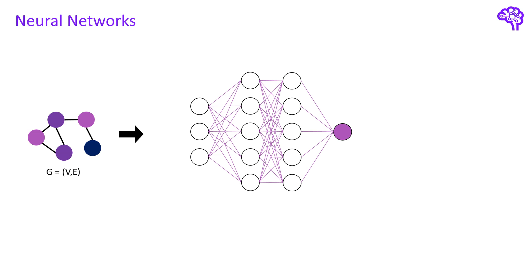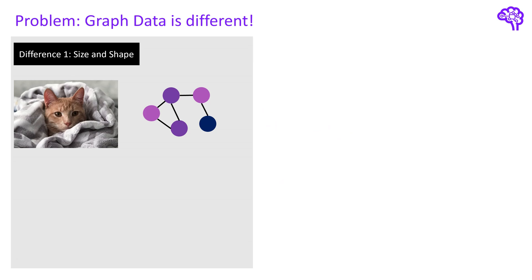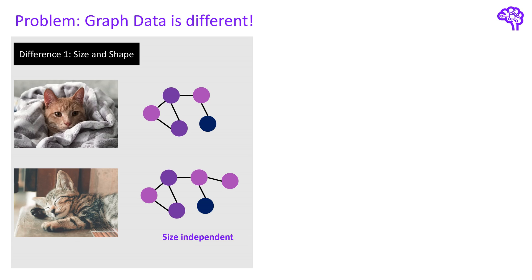As you might know, neural networks typically expect a fixed-size input. This brings us to the first difficulty of graph data: the size and shape of a graph might change within a dataset. This might also be true for other data types such as images, but there you can simply resize, pad, or crop images to the same size. Such operations are not defined on graph data — if you have additional nodes or edges you cannot simply remove them. Therefore we need a method that can handle arbitrary input shapes.